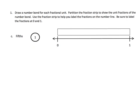So in this problem, it says draw a number bond for each fractional unit, partition the fraction strip to show the unit fractions of the number bond, and then use the fraction strip to help you label the fractions on a number line. Students very rarely make mistakes with a tape diagram, but when it becomes time to do that on a number line, they suddenly make those mistakes.